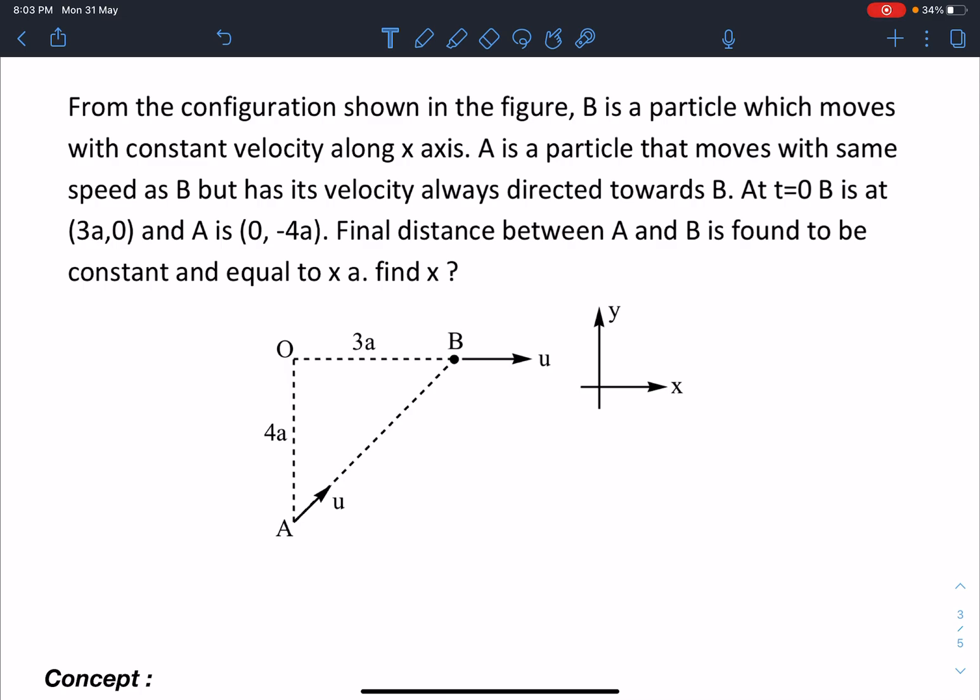Here is the problem statement. From the configuration shown in the figure, B is a particle which moves with a constant velocity along the x-axis. A is a particle that moves with the same speed as B but has its velocity always directed towards B.